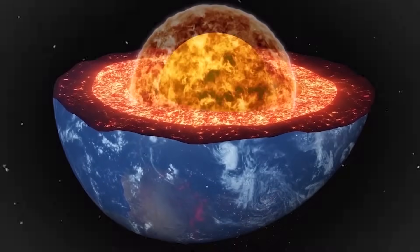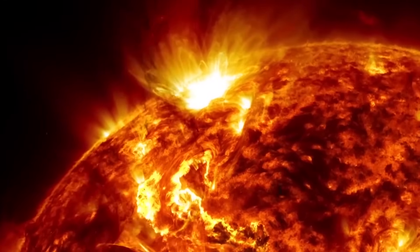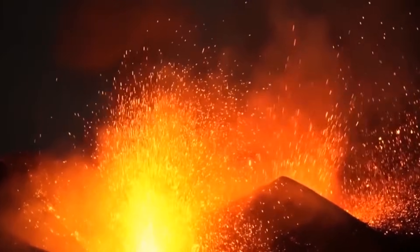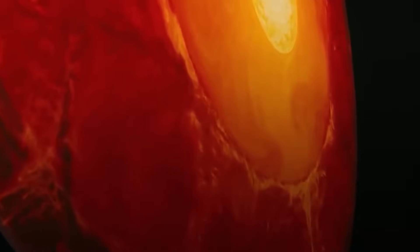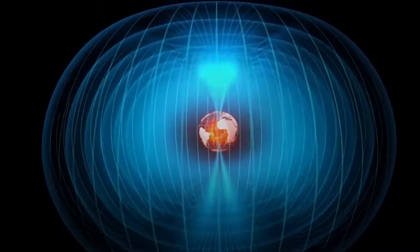This process is like a colossal dynamo, powered by the natural convection of molten metals heated to extreme temperatures. However, the flow of the outer core is chaotic. Over time, these fluid motions can become erratic, disrupting the existing magnetic field.